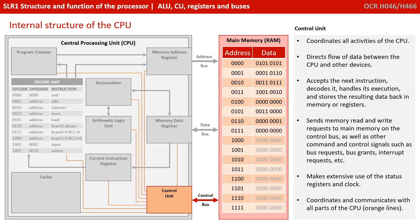Arguably the most important component inside the processor is the control unit, and it's responsible for coordinating all the activities of the processor. It directs the flow of data between the CPU and all other devices on your computer. It accepts the next instruction that it needs to deal with, decodes it, handles its execution and stores the results of data back into memory or other registers. It's responsible for sending memory read and write requests to main memory on the control bus, as well as other command and control signals such as bus requests, bus grants, interrupts etc.